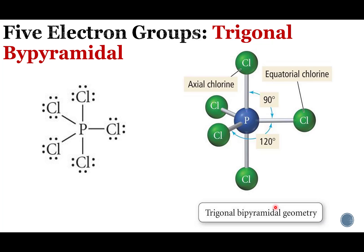We also have some terminology to talk about where lone pairs go: equatorial and axial atoms. Axial atoms are the ones pointing straight up or straight down — think of how the Earth spins on an axis, same idea here. Equatorial atoms are on the equator of this molecule — so these three chlorines all in the same plane, right in the center of the molecule, are equatorial.